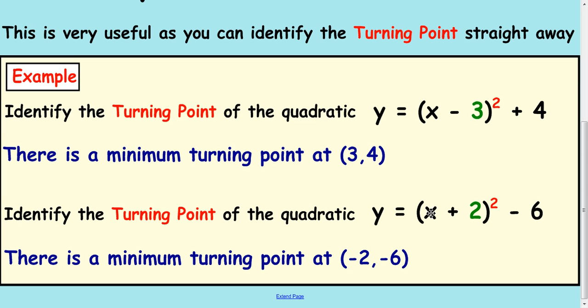In this one the x value would be -2, the turning point to make the bracket 0. And the y value would be -6 at this point. So (-2, -6).